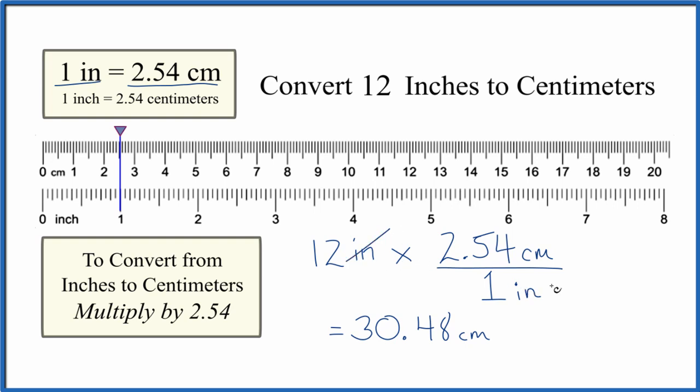Inches will cancel out, left with centimeters. So 12 inches is equal to 30.48 centimeters. Way to do that: memorize that one inch equals 2.54 centimeters, and to convert from inches to centimeters, we just multiply inches by 2.54.